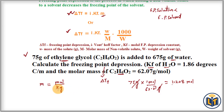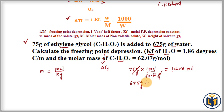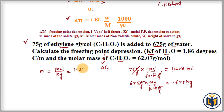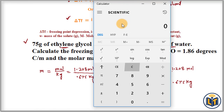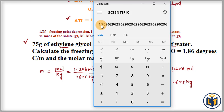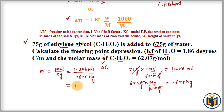Next, we convert the mass of solvent to kilograms: 675 grams divided by 1000 gives 0.675 kg. Now we calculate molality: 1.208 moles divided by 0.675 kg equals 1.789, which can be rounded to 1.790 mol/kg.